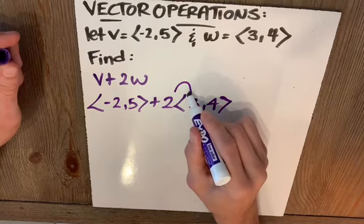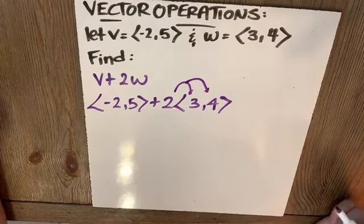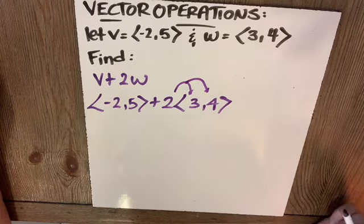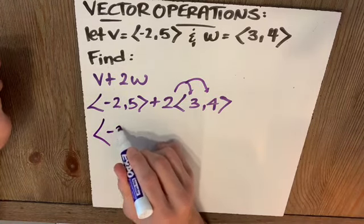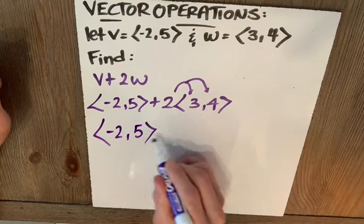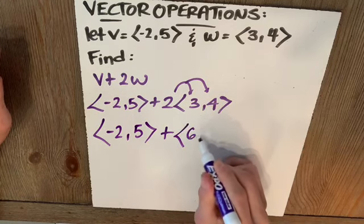All right, so I'm going to multiply that scalar by both W1 and W2, my X component and Y component. So this will result in negative 2, 5, plus 6, 8.